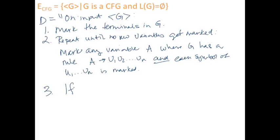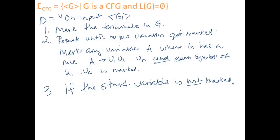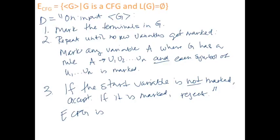The last step: if the start variable is not marked, that means the start variable cannot construct a string of terminals — we accept, meaning the language is empty. If it is marked, the start variable can generate some string of terminals — we reject, because the language is not empty. So D is a decider for ECFG, meaning ECFG is decidable, and because it's decidable, it's also Turing recognizable.